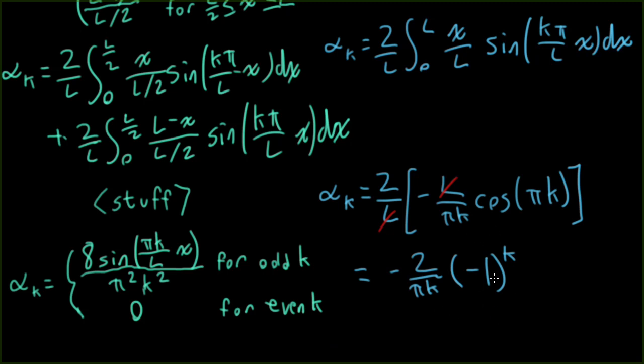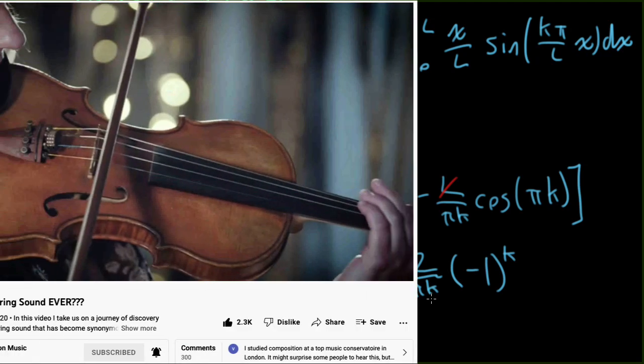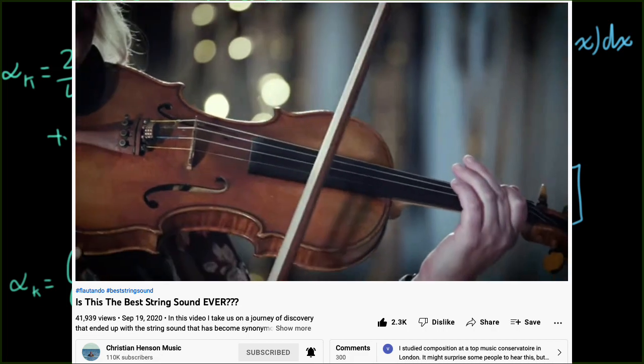So notice a couple of interesting things. For the ramp kind of initial condition we looked at earlier, you get all of the harmonics. For the triangle initial condition where you pluck in the middle, you wind up with only the odd harmonics. The even harmonics are suppressed. Also notice that the harmonics for the triangular initial condition slope off on the order of 1 over k squared. So they decrease in amplitude much faster with k than we see in the case for that ramp initial condition. So that's why plucking in the middle of the string has a very different effect than plucking near the bridge. It provides a much more mellow sound.